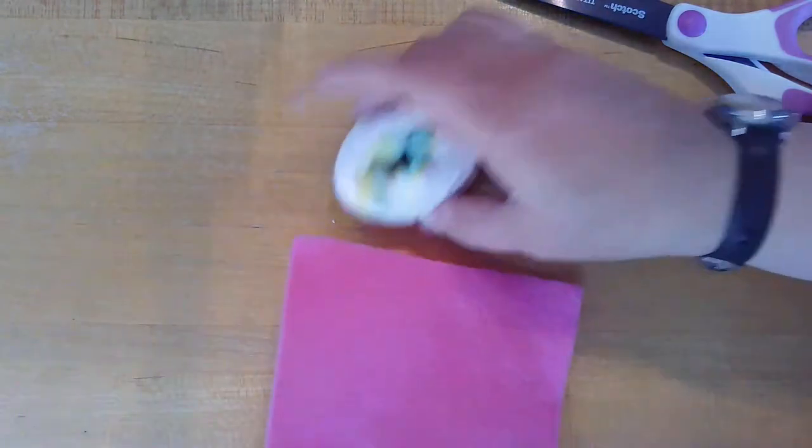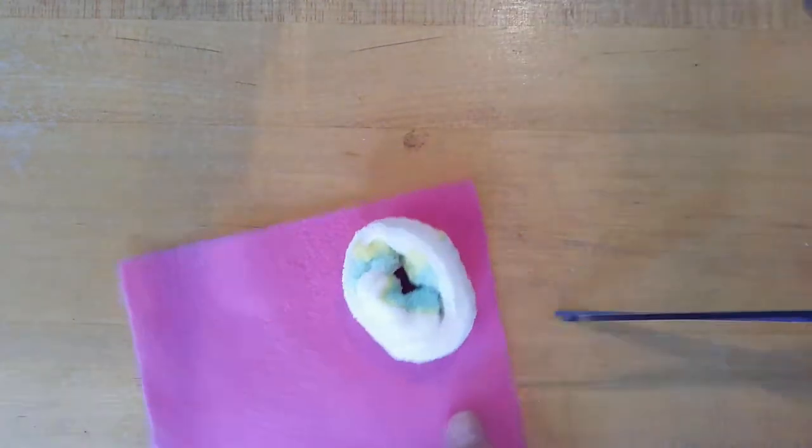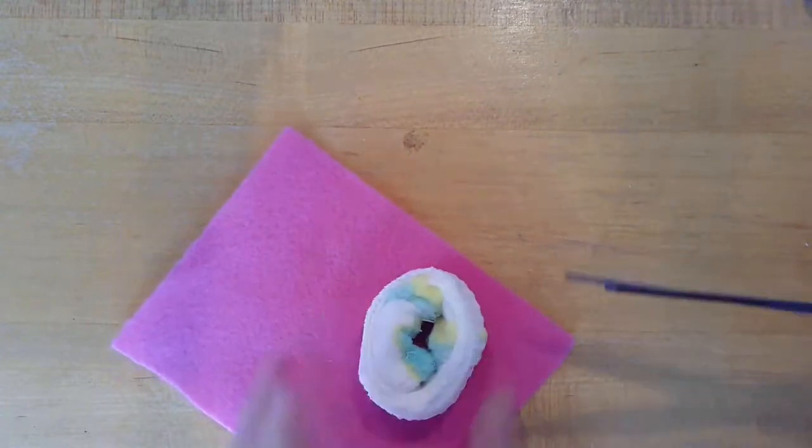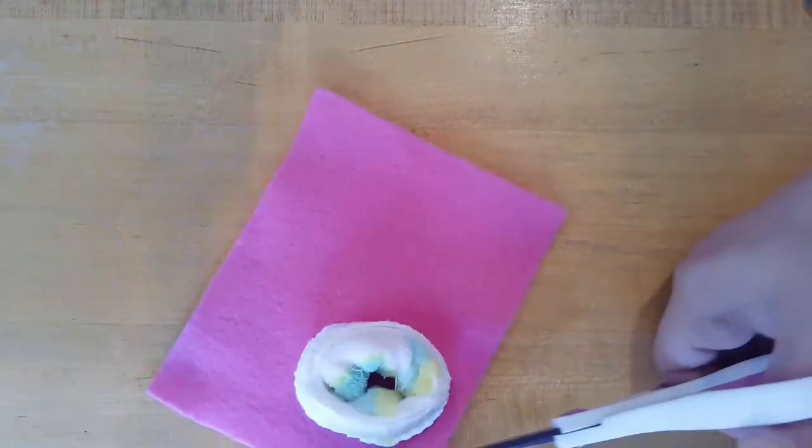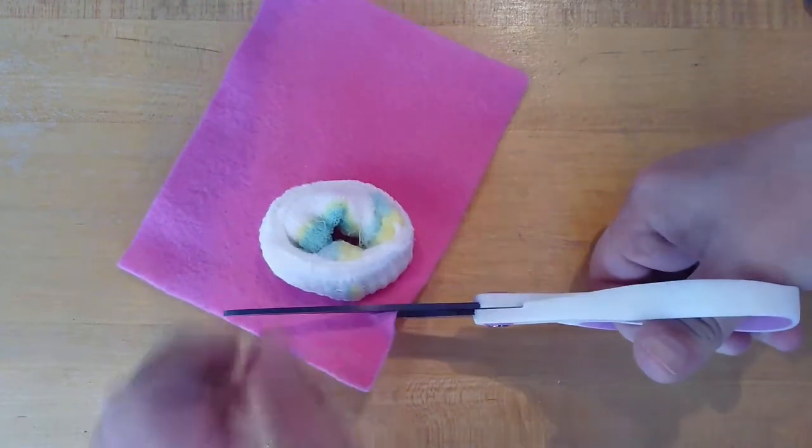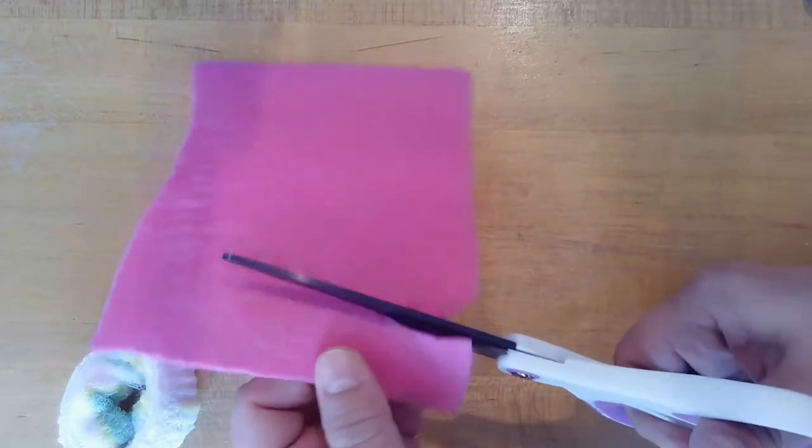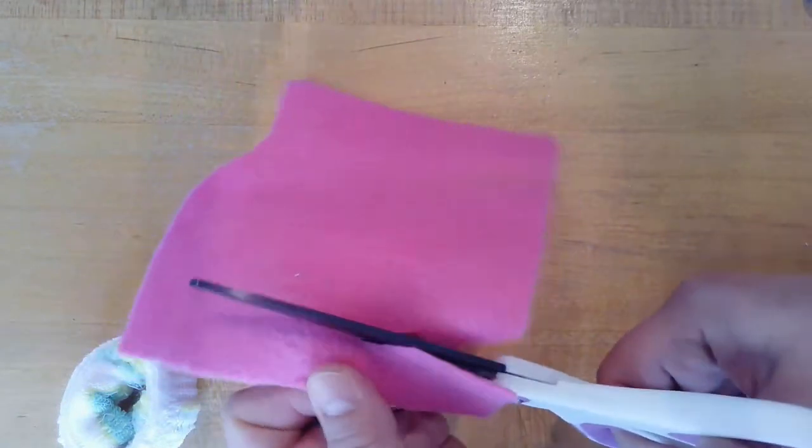All right, to cut out your icing, you're going to position your sock on your felt, just to eyeball the size there and what you might need. And you can kind of trim around the square to make a blob shape, just to get the right size at first.